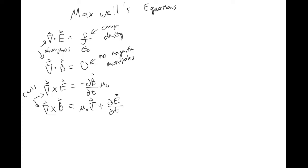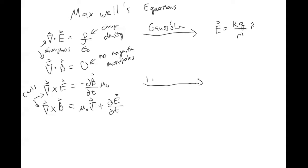We have seen these equations just written a different way. This is called Gauss's Law. If you do Gauss's Law on a point source, you get this equation for the electric field for a point source — you guys have seen that equation on the right before. The equation on the left is just a more general, calculus-based version of the thing on the right. The third equation we've seen is Faraday's Law, which we saw written as change in flux over change in time.